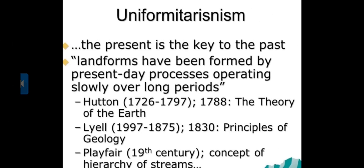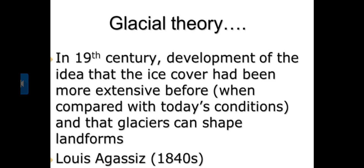Uniformitarianism held that the present is the key to the past — landforms have been formed by present-day processes operating slowly over long periods. Famous contributors include Hutton's Theory of the Earth, Lyell's Principles of Geology, and Playfair's concept of hierarchy of streams. The glacial theory, developed in the 19th century, proposed that ice cover had been more extensive before and that glaciers can shape landforms.